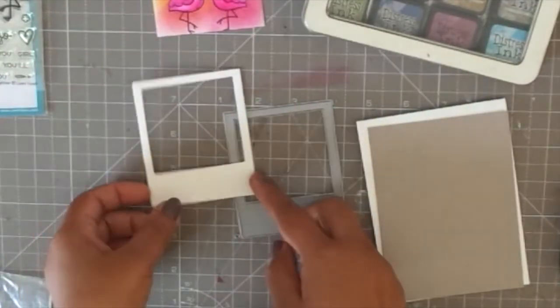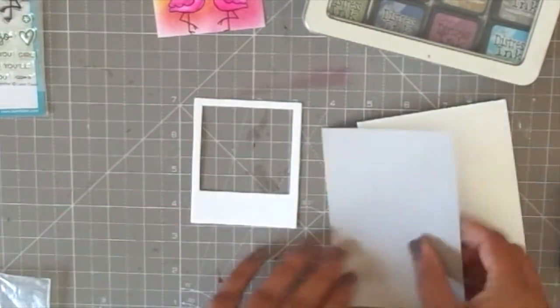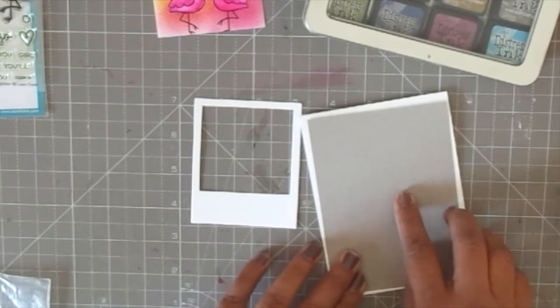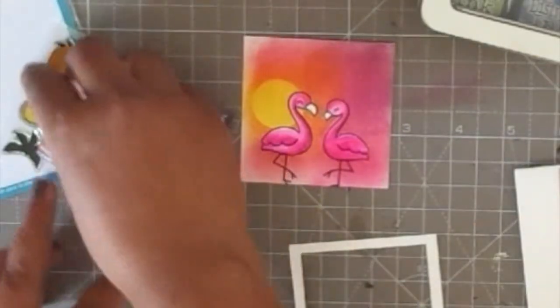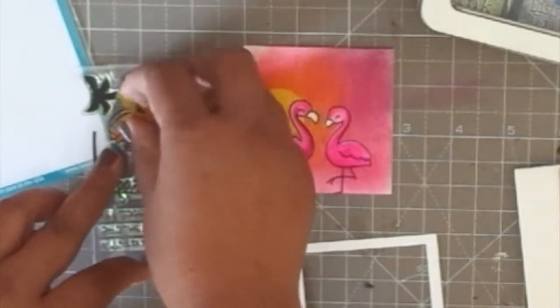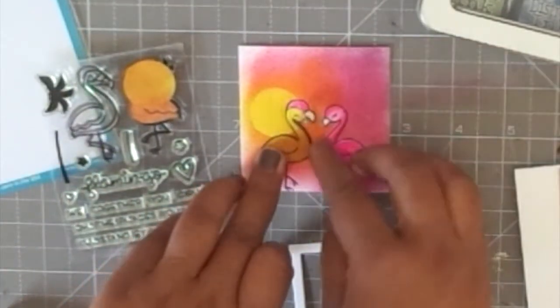I trimmed down the finished piece to the size of the Polaroid. I have cut down the Polaroid from an ivory color sheet as well and then I have the matting sheet and the card base ready to go. Now I'm going to add final touches to this card.